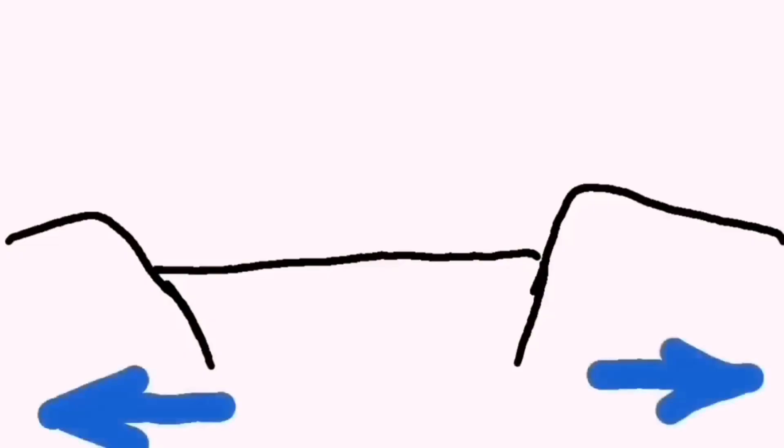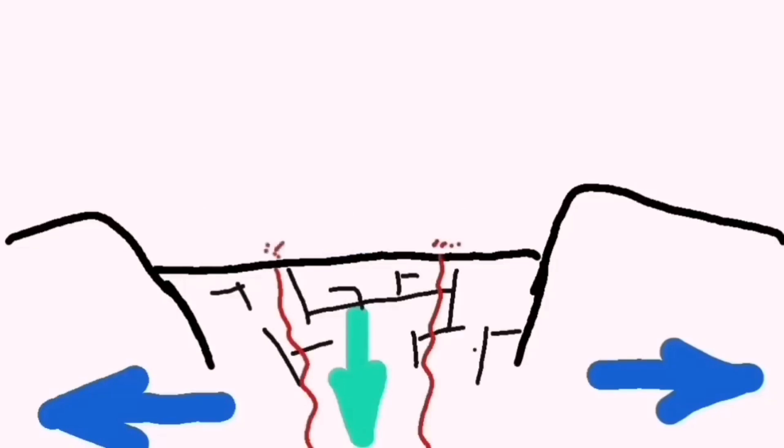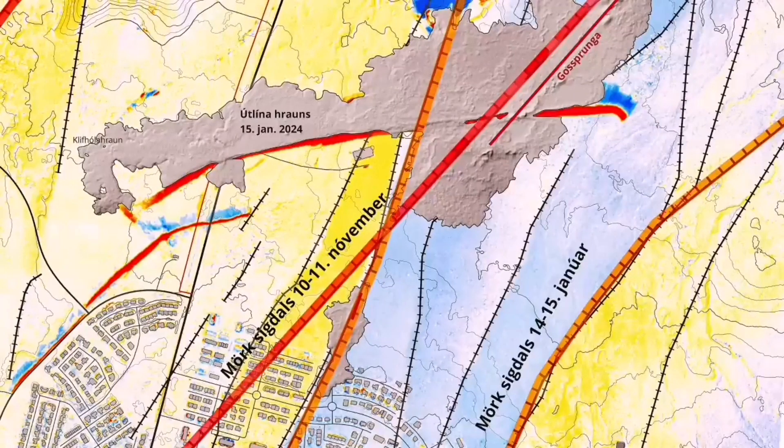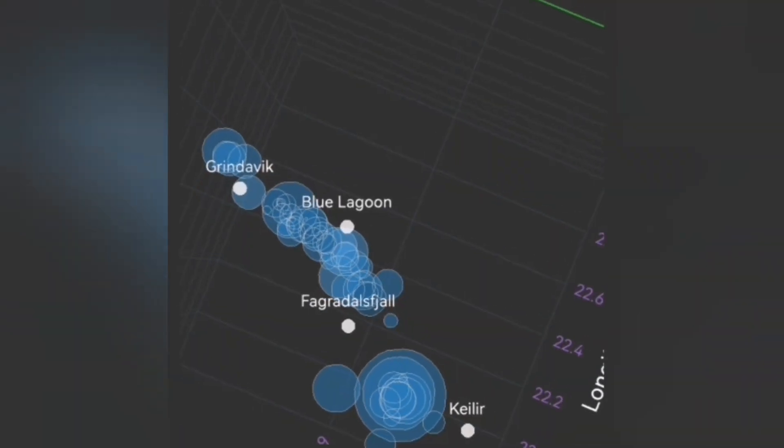And this diagram shows that movement ripping apart of the land causes downfall of a block of rock, and that creates cracks. Through the cracks, magma can rise and melt and create lava.